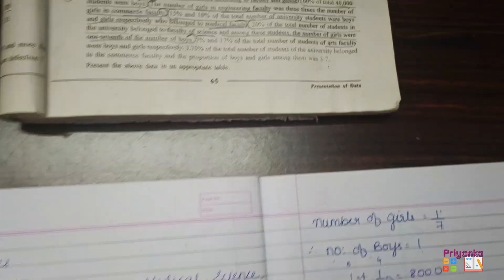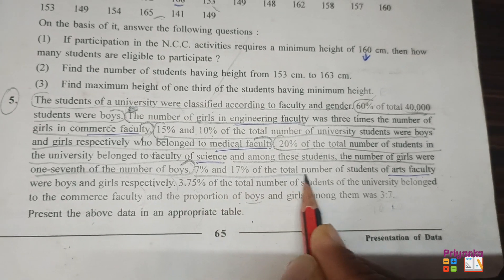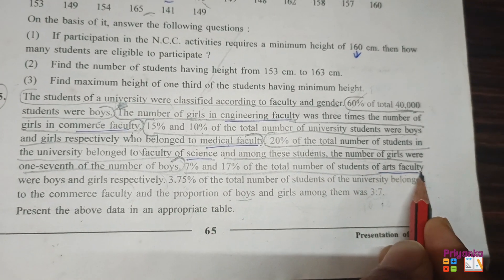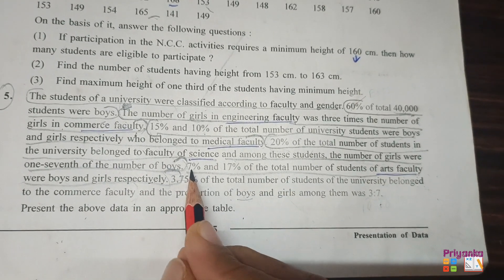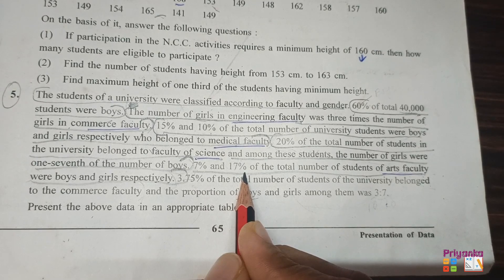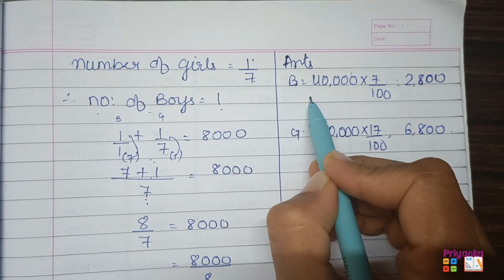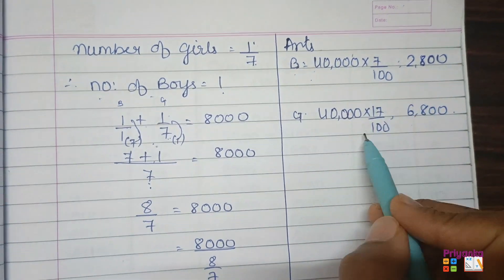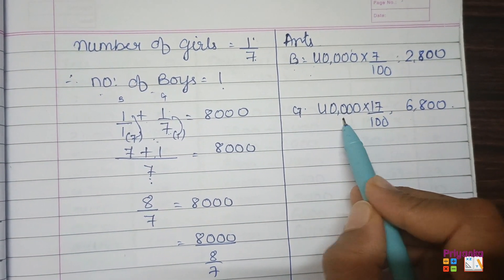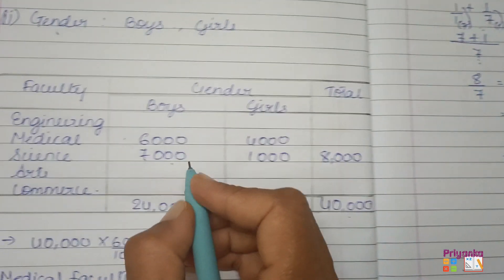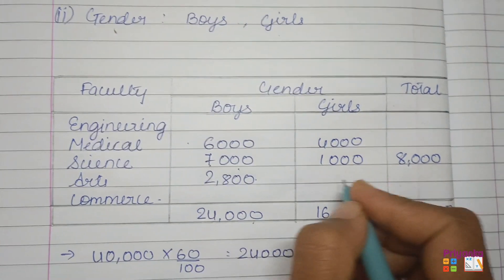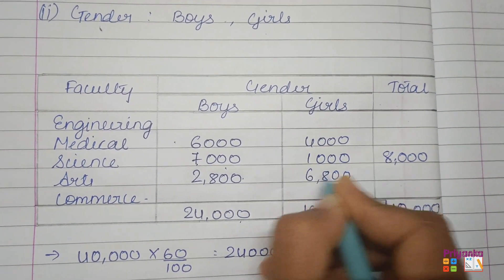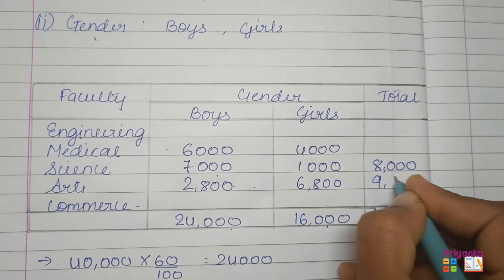For arts faculty: 7% and 17% of total 40,000 students are boys and girls respectively. 7% of 40,000 gives 2,800 boys and 17% of 40,000 gives 6,800 girls. Adding both gives 9,600 total students in arts faculty.